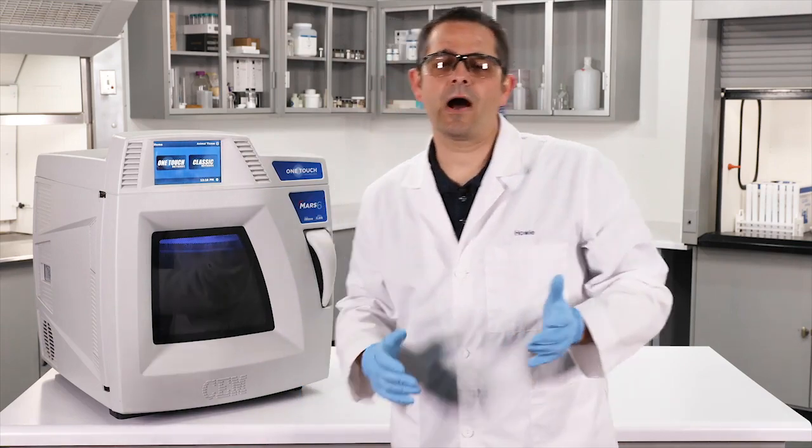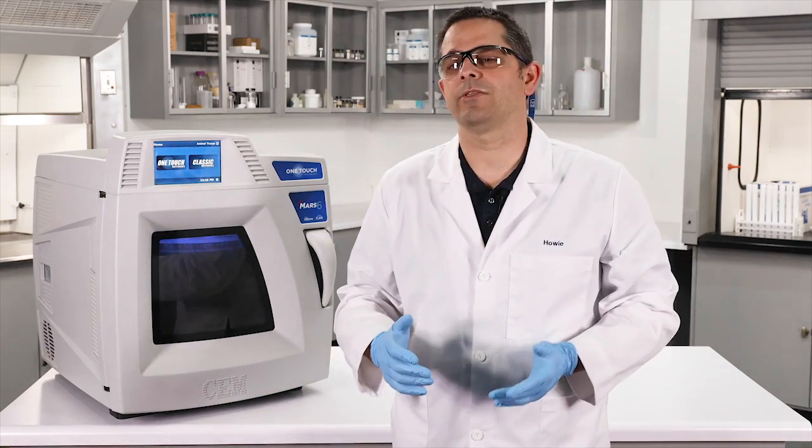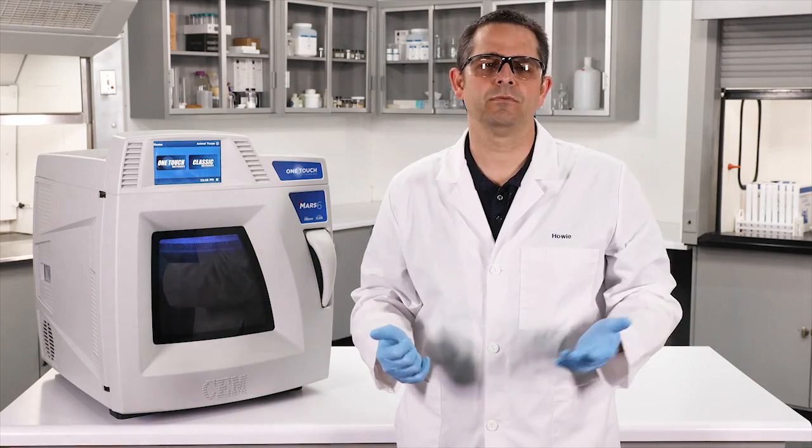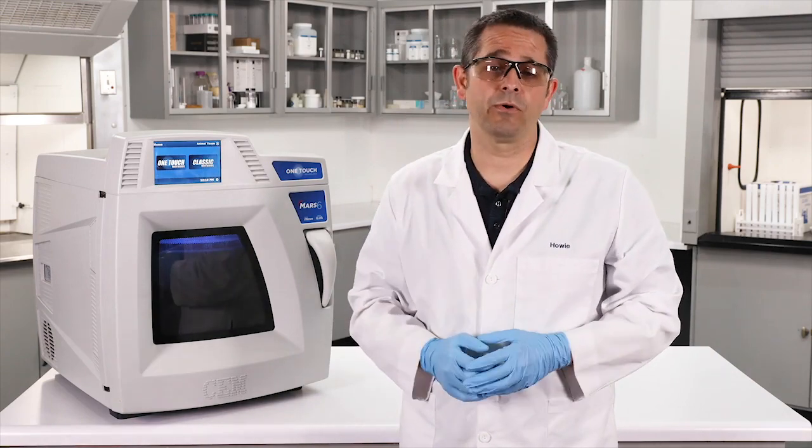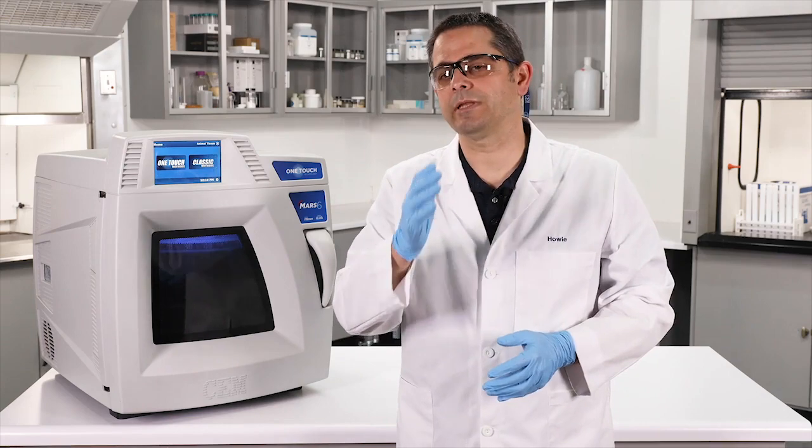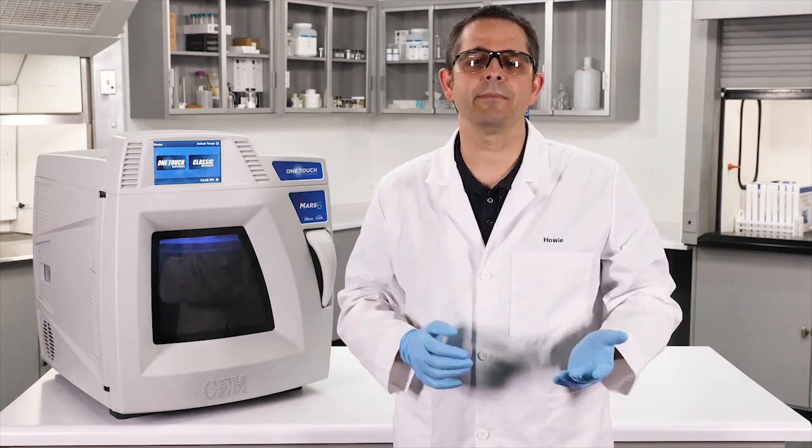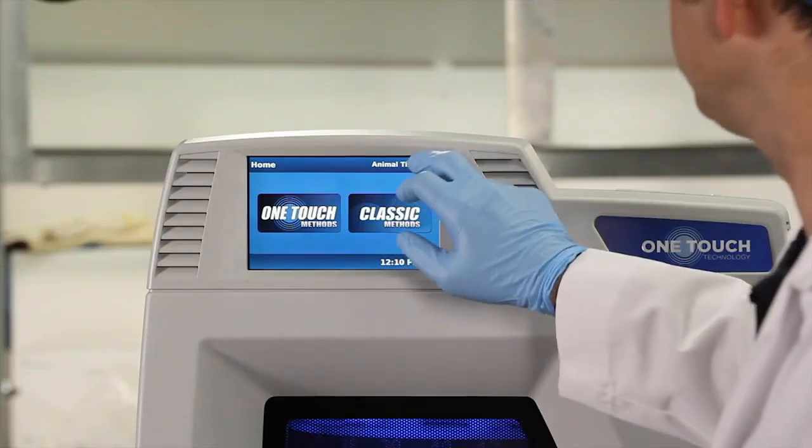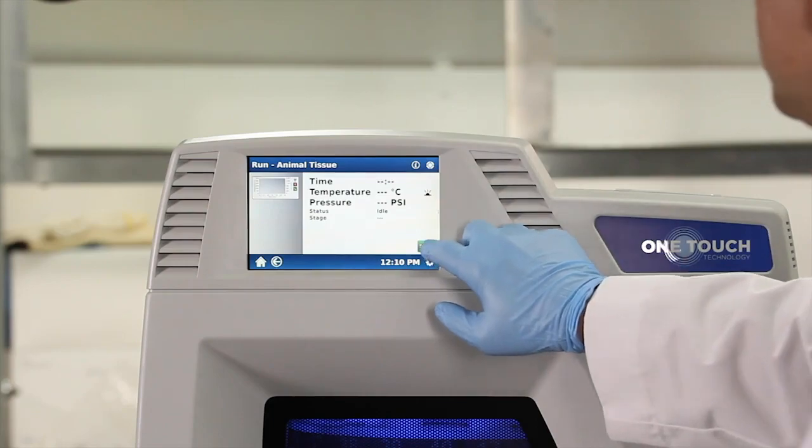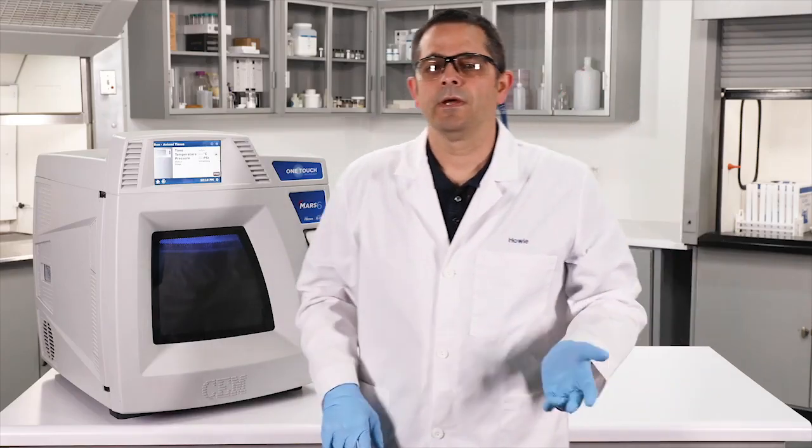All right, we have the samples loaded. Now I do not have a one-touch leather method, but animal tissue is close enough and it will get me to 200 degrees C, which will be needed to completely break down the matrix. Let me choose that and press start. Here's our animal tissue one-touch. While the samples are digested, let's get on the world wide web and take a look at the history of the origins of football.